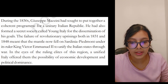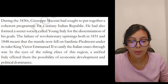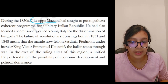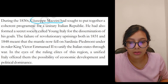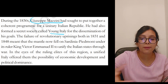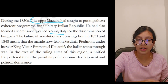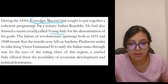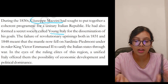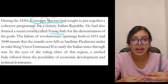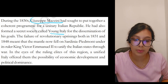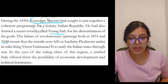During the 1830s, Giuseppe Mazzini had sought to put together a coherent program for a unitary Italian republic. He had also formed a secret society called Young Italy — if you remember, from the first part of the chapter, he founded groups like Young Italy for the dissemination of his goals. Mazzini did a lot for the unification of Italy.